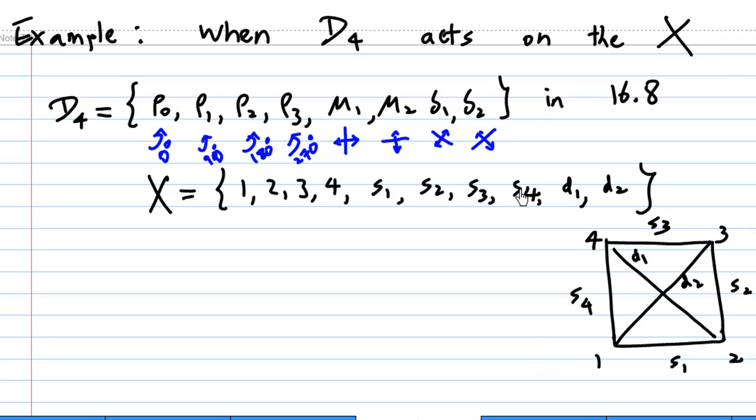And X taken from the square consists of four vertices 1, 2, 3, 4, and four sides S1, S2, S3, S4, and two diagonals D1 and D2.